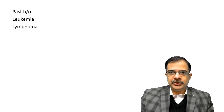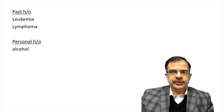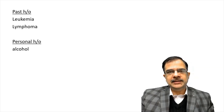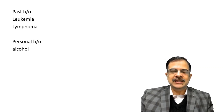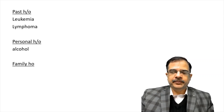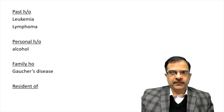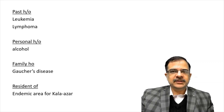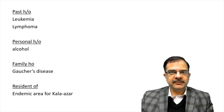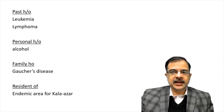In past history, the patient must have a record of lymphoma or leukemias. Personal history points towards alcohol, which means it might be causing chronic liver disease, cirrhosis, and portal hypertension. Family history covers congenital or hereditary disorders, as well as residence — because that gives a clue that kala-azar will be endemic in certain areas like the eastern part of our country.